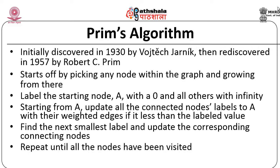You start with the node and label it with 0 and all others with infinity, since you have not traveled there. From the starting node you update the label of all connected nodes with their weighted edges — only if the weight is less than the label value; if the weight is more, we do not update. After doing this, you select the next smallest label and update the corresponding connected nodes. You repeat until all the nodes have been visited.